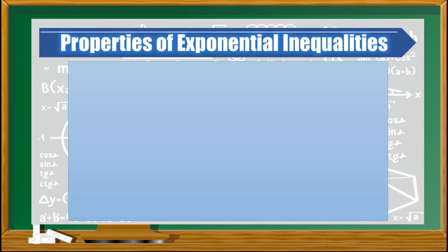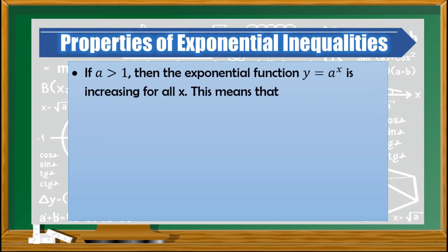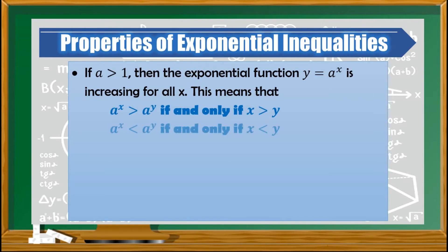So how do we solve an exponential inequality? We need to follow certain properties. If a is greater than 1, then the exponential function y equals a raised to x is increasing for all x. This means that if a raised to x is greater than a raised to y, if and only if x is greater than y. And if a raised to x is less than a raised to y, if and only if x is less than y.